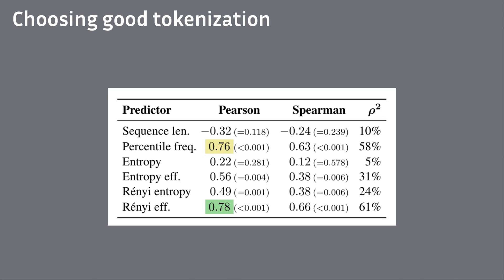Indeed, across multiple tokenization metrics, our Rényi efficiency does the best and explains the biggest chunk of the variance. It penalizes very high frequency and very low frequency units differently, which has some later implications.